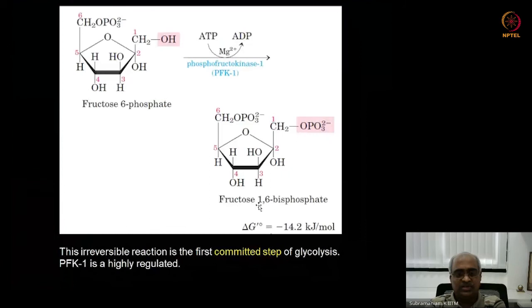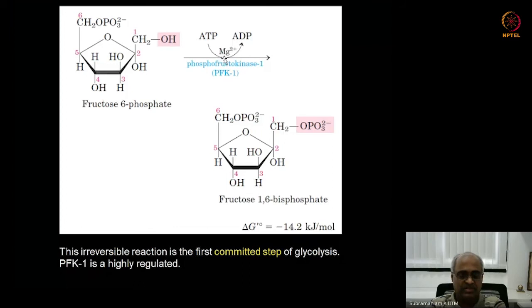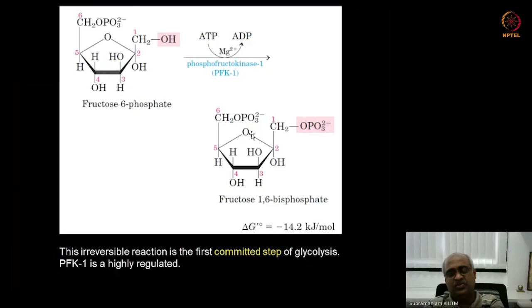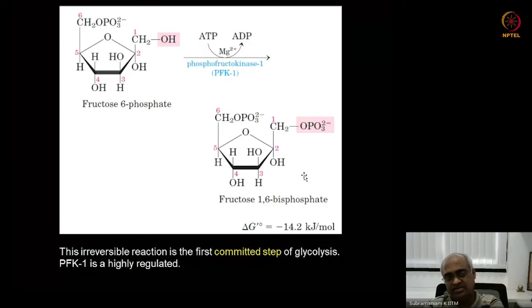This reaction is irreversible — it goes only in one direction. The product, fructose-1,6-bisphosphate, can only participate in glycolysis and does not enter any other metabolic pathway. Therefore, there is no point producing this molecule if glycolysis is not required. This enzyme is subject to serious regulation — it will be inhibited if glycolysis is not needed. This phosphorylation commits fructose-6-phosphate to glycolysis; that is why it is called the committed step.